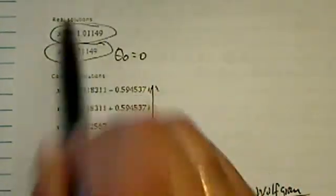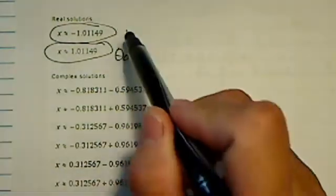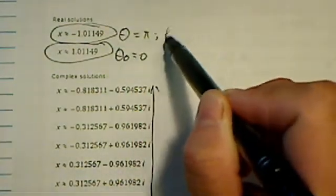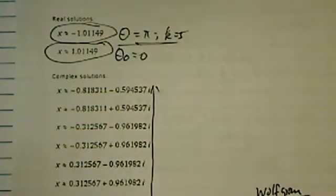And there is another one. I'm pretty sure that's one when theta is equal to pi. Okay, so when k equal to 5, basically.